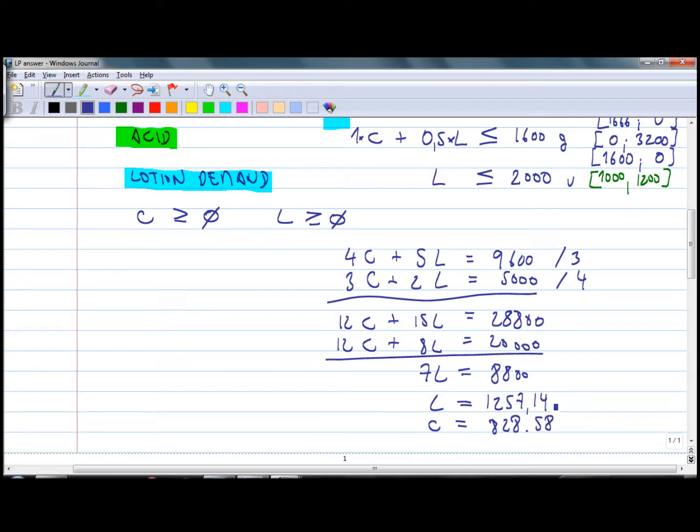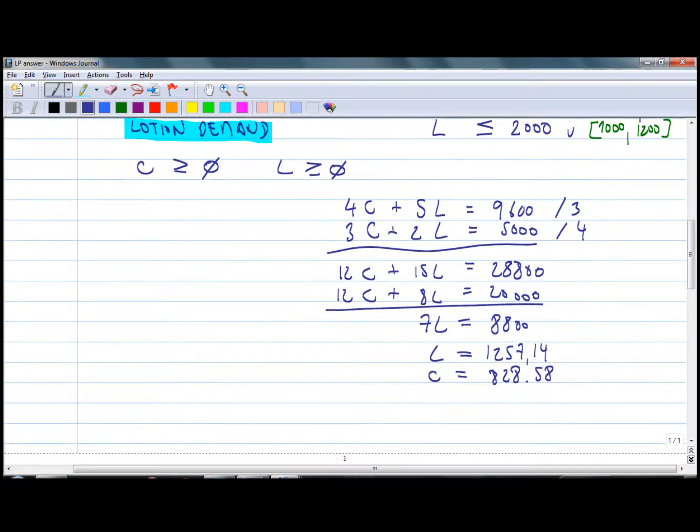Now we have calculated the optimum quantity. If we substitute these quantities into our objective function, 9C plus 8L, what we get is the optimum contribution, which comes to 17,514.34.